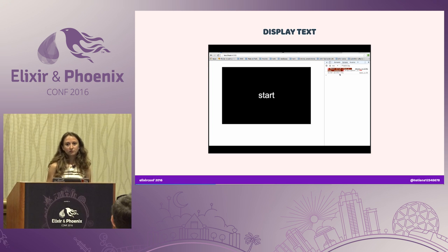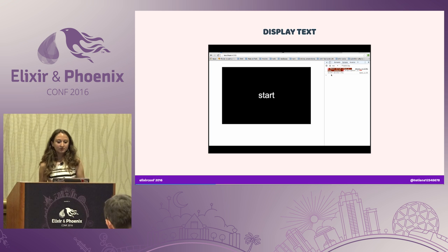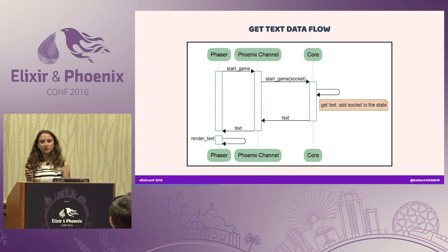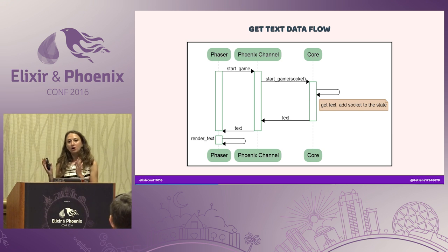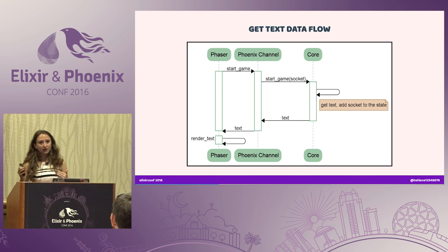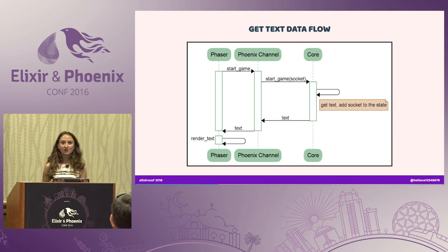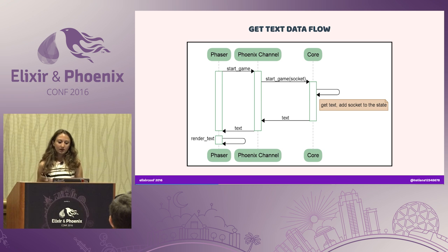So you could see here — when we load our browser, we get our start button, and we log in our console that we joined the channel. And then whenever we press the start button, we have the message which we are going to type. So let's go to rendering the message. From Phaser, we are sending a start game message to the Phoenix channel, and the channel passes it through to the core. Core is our umbrella application responsible for getting the events and passing them through, and it accepts the socket because it will need, at a later stage, to send back the result. The next step is to get the text and pass it back to the channel, which passes it back to Phaser, and Phaser just renders it on the screen.